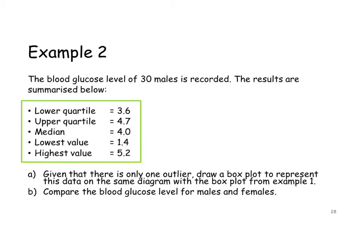We're asked to draw a box plot. They have also given us some extra information — given that there is only one outlier. That's important because we do need to know if there are any outliers. And we have to represent the data on a box plot with the box plot from the previous example, and then compare the blood glucose level for males and females.